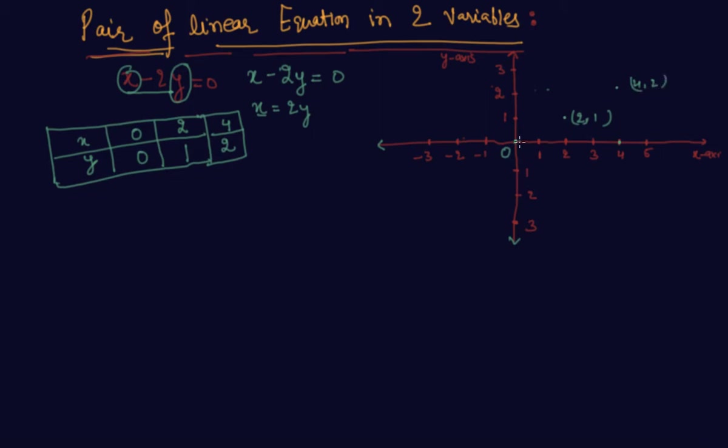Our pictorial representation of the line will come like this and you can extend the line here also. Kindly bear with me, my drawing is not that good. This is the equation of the line x minus 2y equals 0.